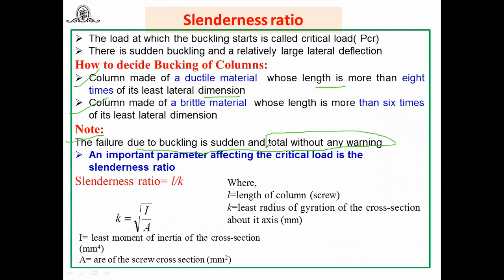Buckling is a sudden failure without any warning, which is why it's very important to find out the critical load. If the column is made of ductile material and length is less than 8 times the lateral dimension, it will not buckle. If made of brittle material and length is less than 6 times the lateral dimension, it will not buckle. This is one approach based on material and length-to-lateral-dimension ratio.